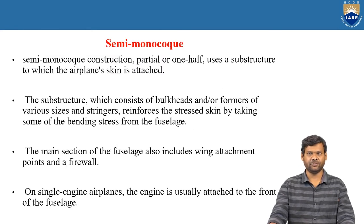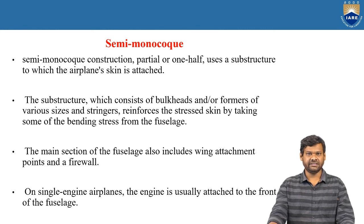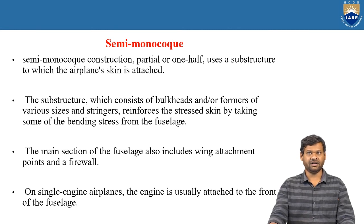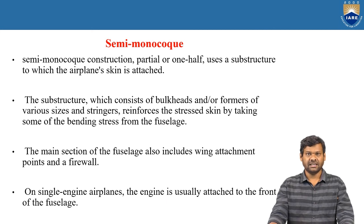Next, coming to semi-monocoque structures. Semi-monocoque construction partly, or one half, uses a substructure to which the airplane skin is attached. This semi-monocoque structure uses a substructure consisting of bulkheads, formers of various sizes, and stringers which reinforce the stressed skin by taking some part of the bending stress from the fuselage. These substructures resist the bending stress imposed by the flight loads. The main section of the fuselage also includes wing attachment points and the firewall.